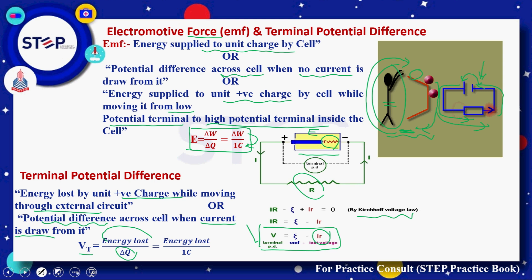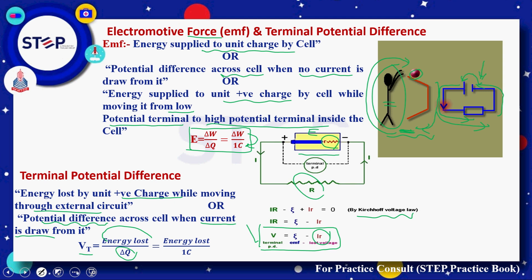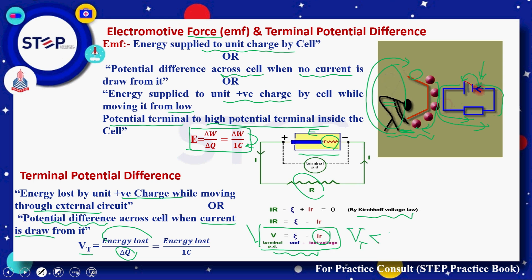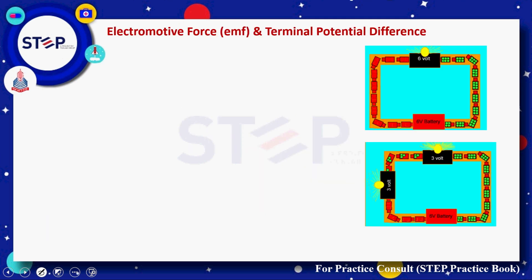So to summarize: EMF is the energy gained by the charge while moving inside the battery, and terminal potential difference is the energy lost by the charge in the external circuit. The relation shows that terminal potential difference is smaller than EMF when the battery is discharging. This is the key relationship between the two quantities.